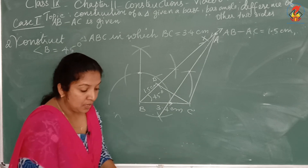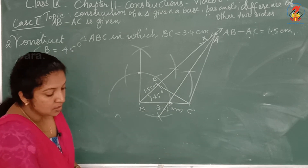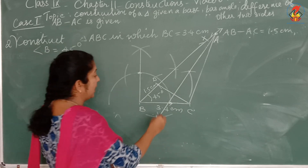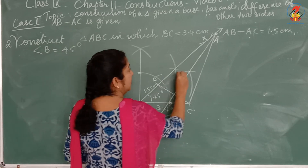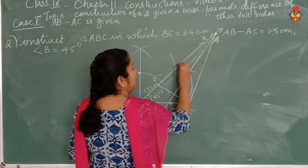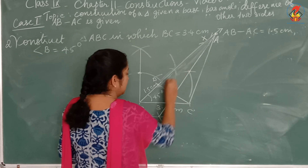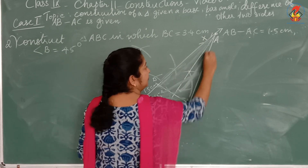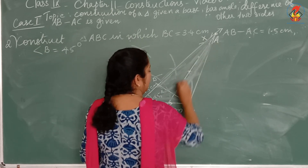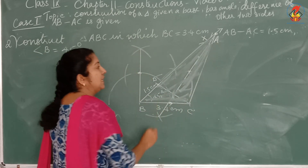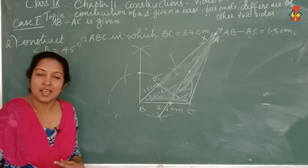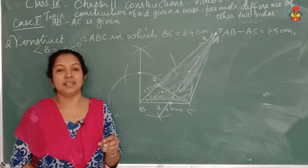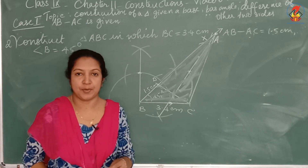Join A and C. Triangle ABC is the required triangle. We have drawn the perpendicular bisector of CD touching BX at A, then joined A and C to complete the construction. I will explain this once more — you have to write the steps of construction.